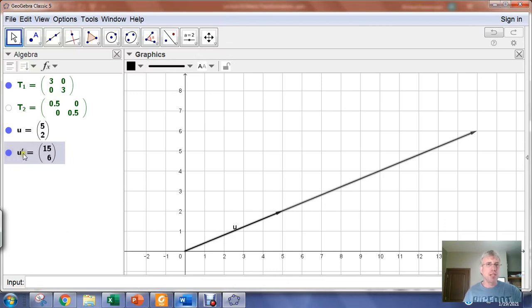U prime is the image of U under the transformation T sub 1. And what we were indicating earlier is we can actually compose these transformations if we want to.